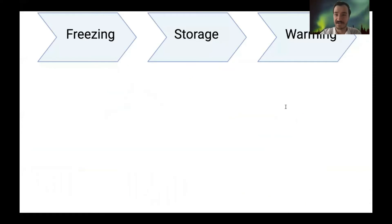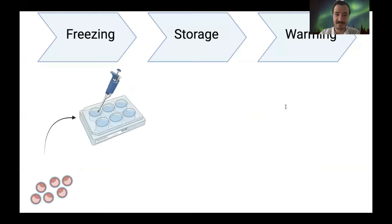Next, we have vitrification, which is a far newer and more popular method nowadays for cryopreservation. This time I'm going to use embryos as my cell samples. We have our embryos and we add them to our CPA solutions containing, for example, glycerol or ethylene glycol and some of those same sugars we spoke about before in slow cooling protocols. This is in progressively increasing concentrations as well.